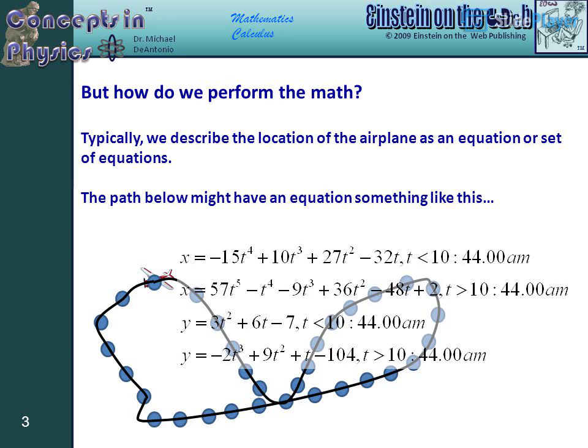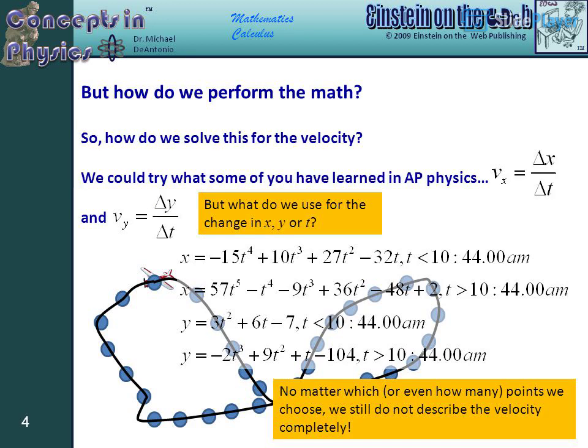Typically, we describe the location of the airplane as an equation or set of equations. The path below might have an equation something like this, but how do we perform the math?